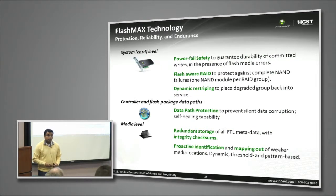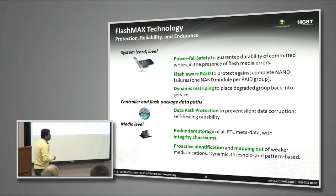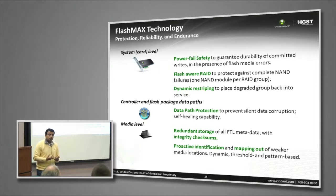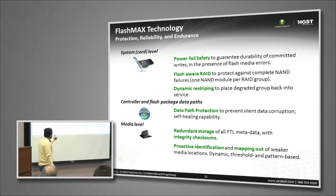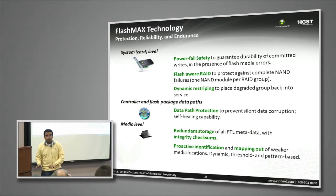For enterprise-class storage devices, we need power protection. What happens if power fails? We commit any writes that are in-flight to the flash media, irrespective of whether power is available or not. We have data path protection and redundant storage of metadata, so parity checking and data integrity checks are always available. We also have proactive mapping and indication of bad blocks — as flash ages, we predict block failures, mark them as bad, and move data elsewhere. That intelligence is built into the driver.